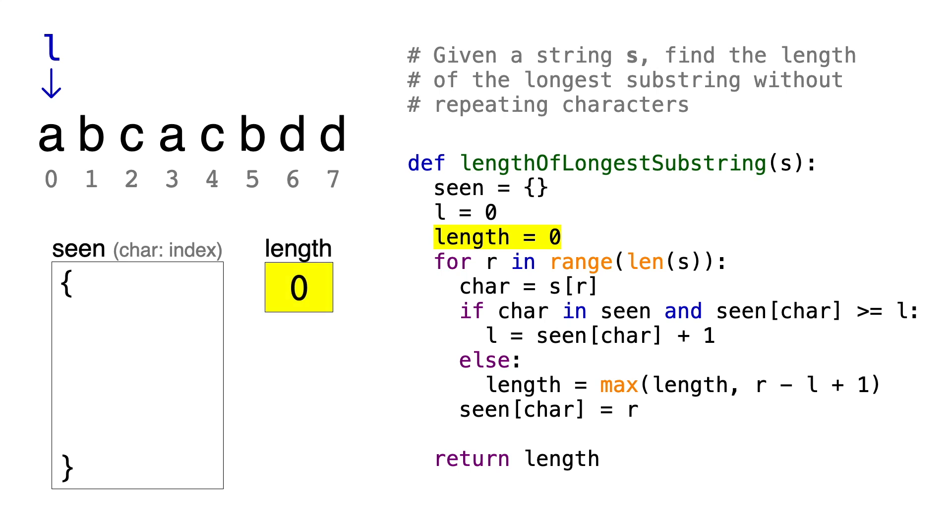Length will contain the length of the longest substring that we've encountered. Next, we'll loop through the entire string using the variable R, which will be the right pointer. R will also start at index 0, so at this point, both the left and right pointer are pointing to the same character. We're going to be adding a character at the right index, so I'll save that character in a variable called char, so that's A.